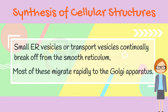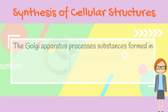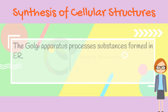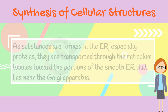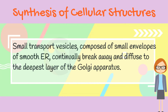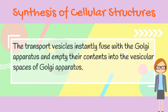Small endoplasmic reticulum vesicles, or transport vesicles, continually break off from the smooth reticulum, and most of these migrate rapidly to the Golgi apparatus. As substances are formed in the endoplasmic reticulum, especially proteins, they are transported through the reticulum tubules toward the portions of the smooth endoplasmic reticulum that lie near the Golgi apparatus. Small transport vesicles composed of small envelopes of smooth endoplasmic reticulum continually break away and diffuse to the deepest layer of the Golgi apparatus, where they instantly fuse with it and empty their contents into the vesicular spaces of the Golgi apparatus.